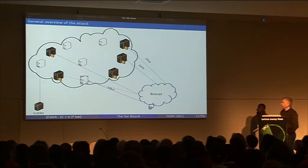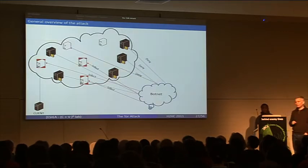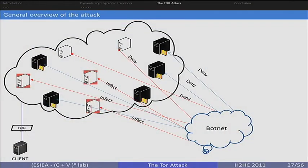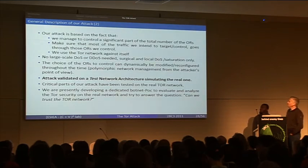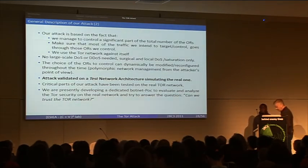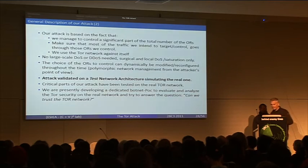So the general description of the attack: you can use a botnet — or several small botnets — in order first to infect some nodes, and then to deny, block, or congest the others. Sean will present in more details. We have, among many things, developed a test network at our school which is rather close to reality, at least statistically speaking, and we have validated everything on this architecture. Some parts have been validated on the real network, and Sean will make experiments using the real network. And the question is, can we trust the Tor network? Or, is it possible for a country to exploit the weaknesses we have mentioned in order to not block Tor, but to control it?